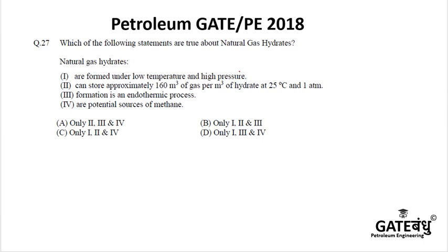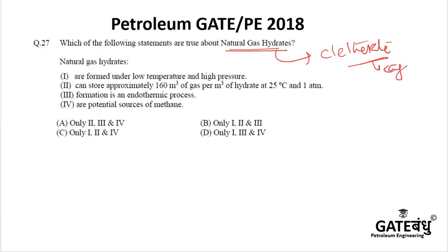This question is based on natural gas hydrate. Gas hydrate is particularly a clathrate-like structure — 'clathrate' means a cage-like structure — where methane plus ice is stable in the form of a clathrate-like structure.